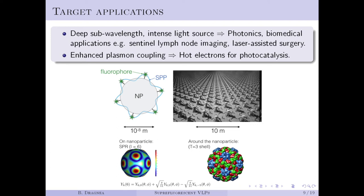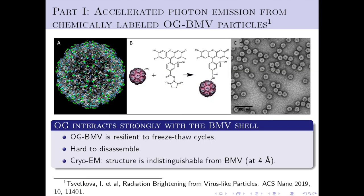The underlying idea is similar, we believe, to that of a phased array antenna, which is a way to generate a bright radar beam from a coherent ensemble of coupled dipole antennas. In terms of applications, we believe such hybrid particles could be useful for biomedical imaging applications and for the generation of hot electrons for photocatalysis in a way that is reminiscent of photosynthetic systems.